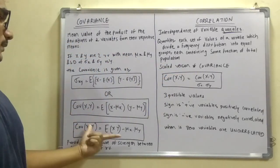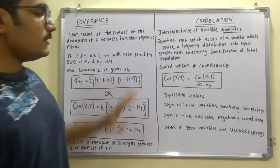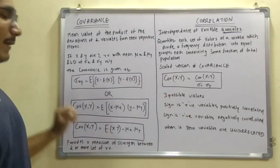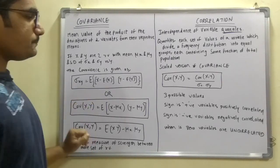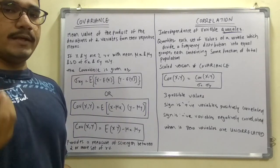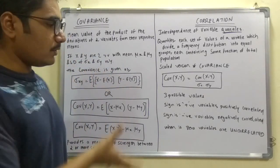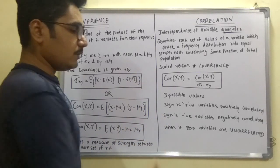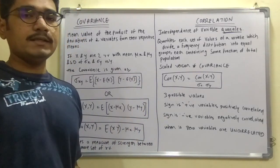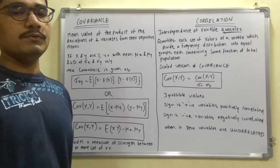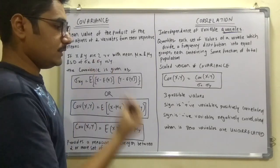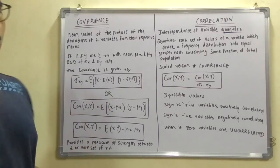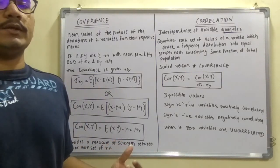There are three possible values applicable for both covariance and correlation. If the result is a positive value, the variables are positively correlated. If the value has a negative sign, the variables are negatively correlated. When the value is zero, the variables are uncorrelated — meaning there is no relationship or measure of strength between the two variables.